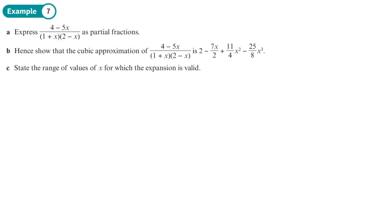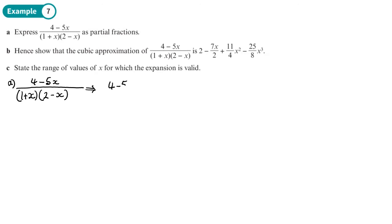Let's start on this example — we're going to express (4 minus 5x) over (1 plus x)(2 minus x) as partial fractions. The numerator 4 minus 5x is equivalent to A times (2 minus x) plus B times (1 plus x).